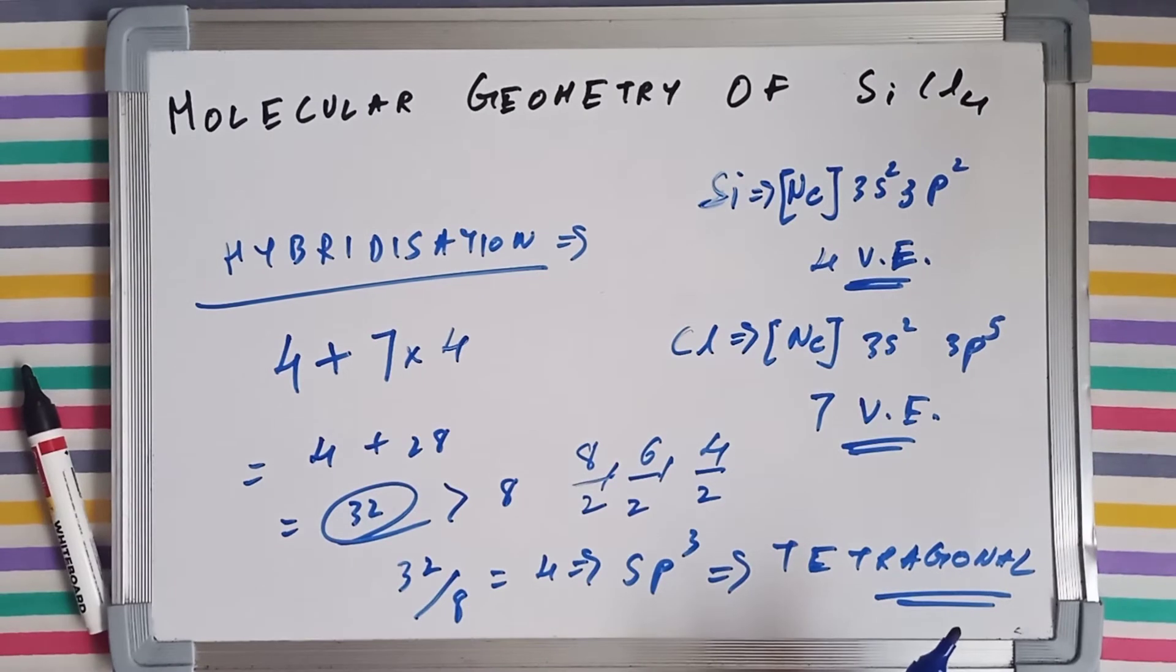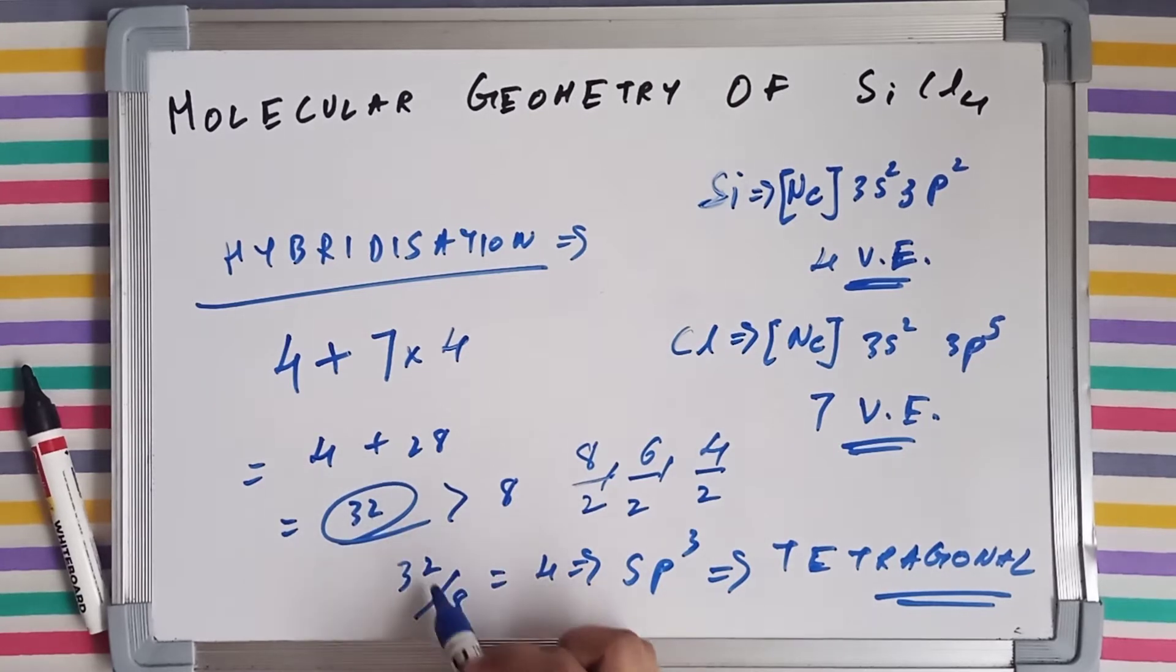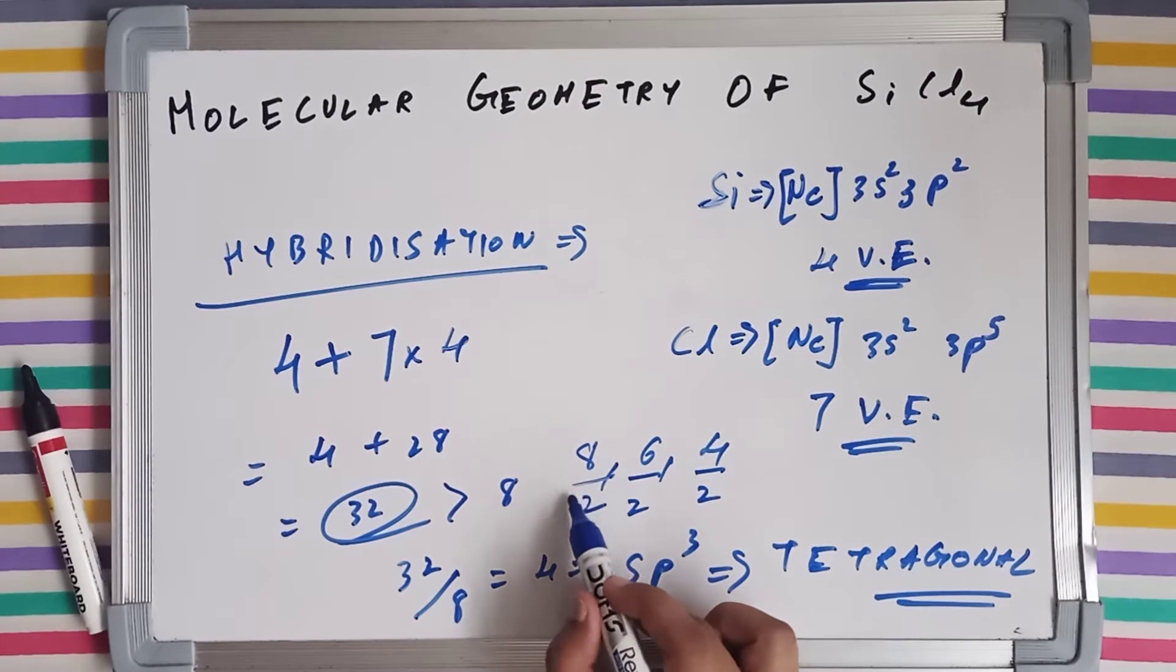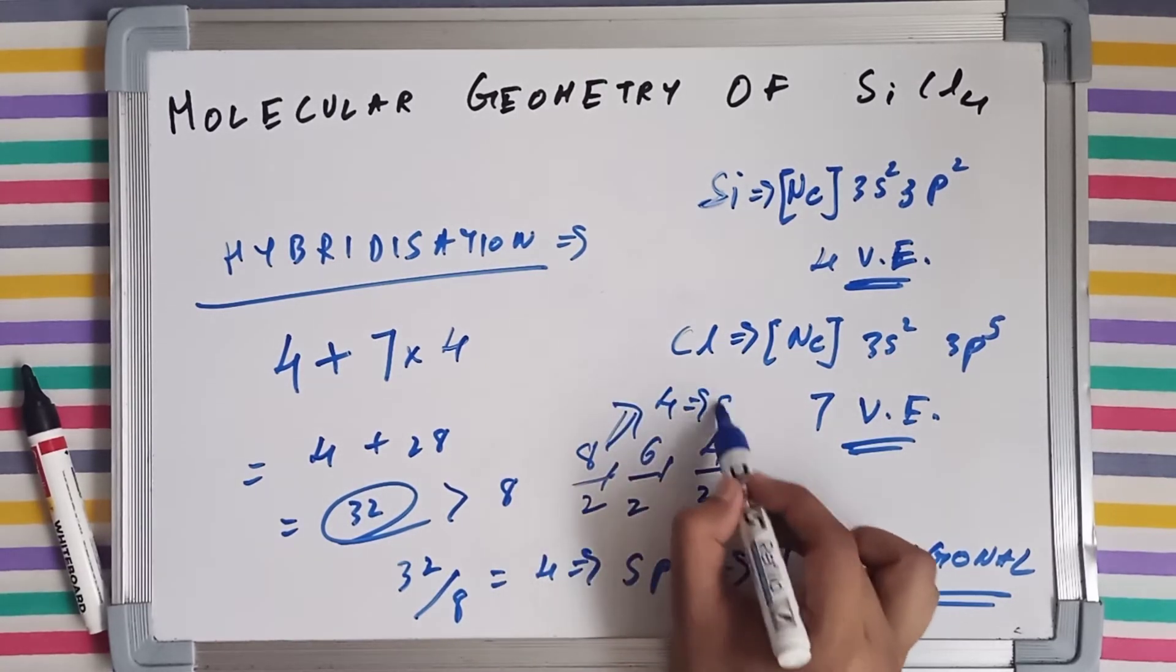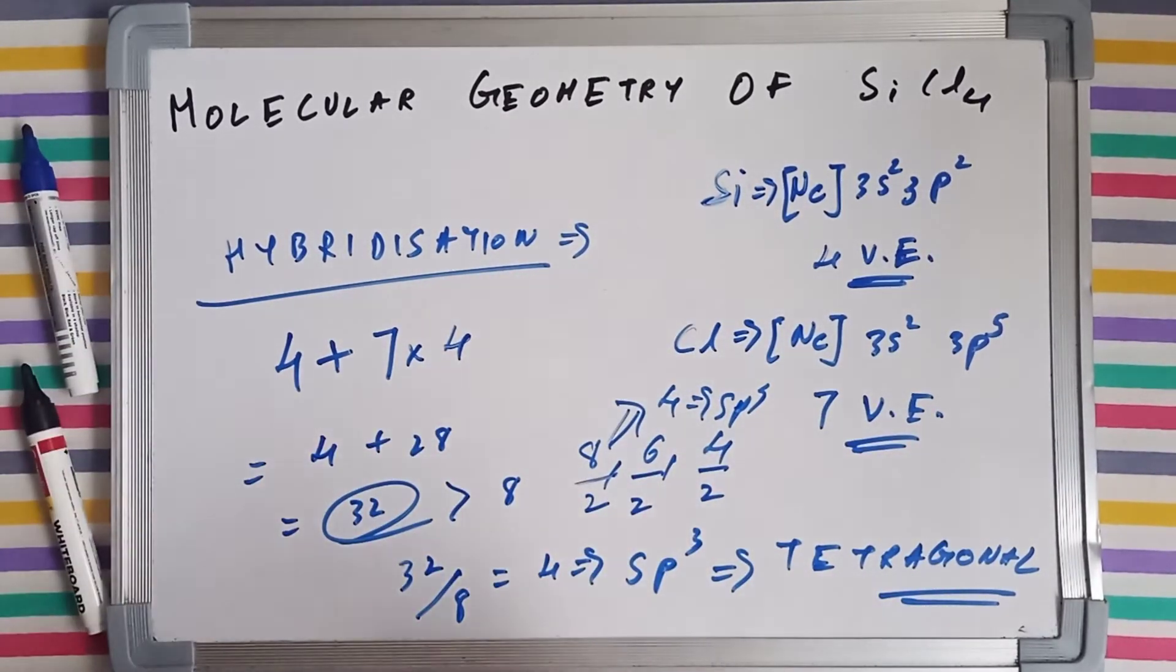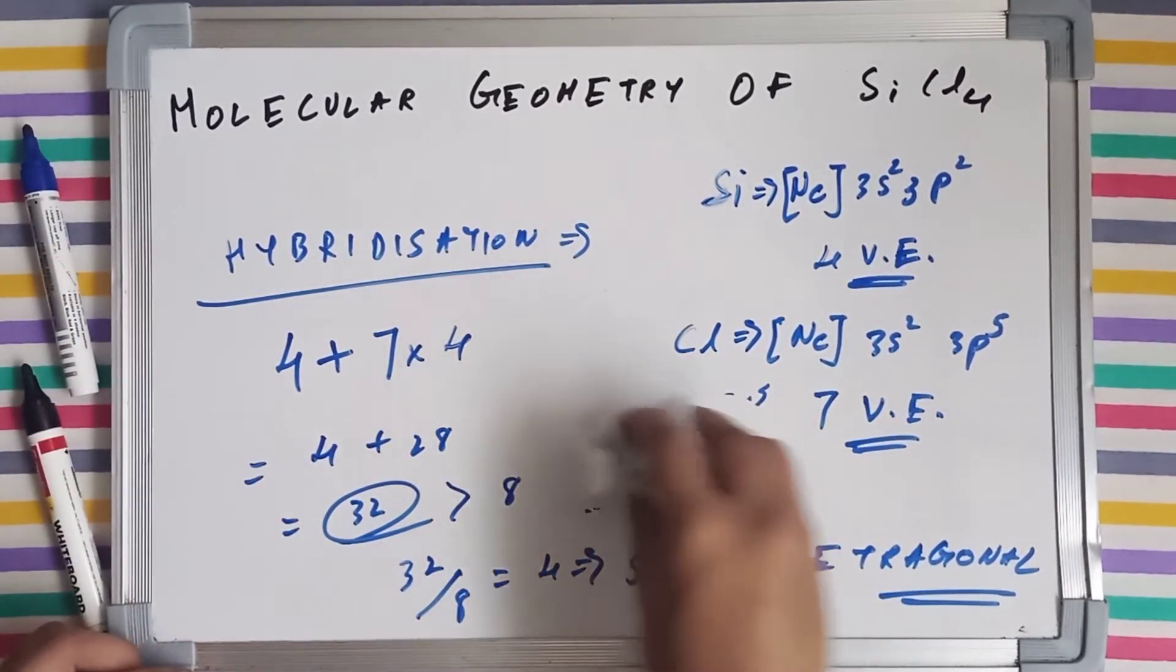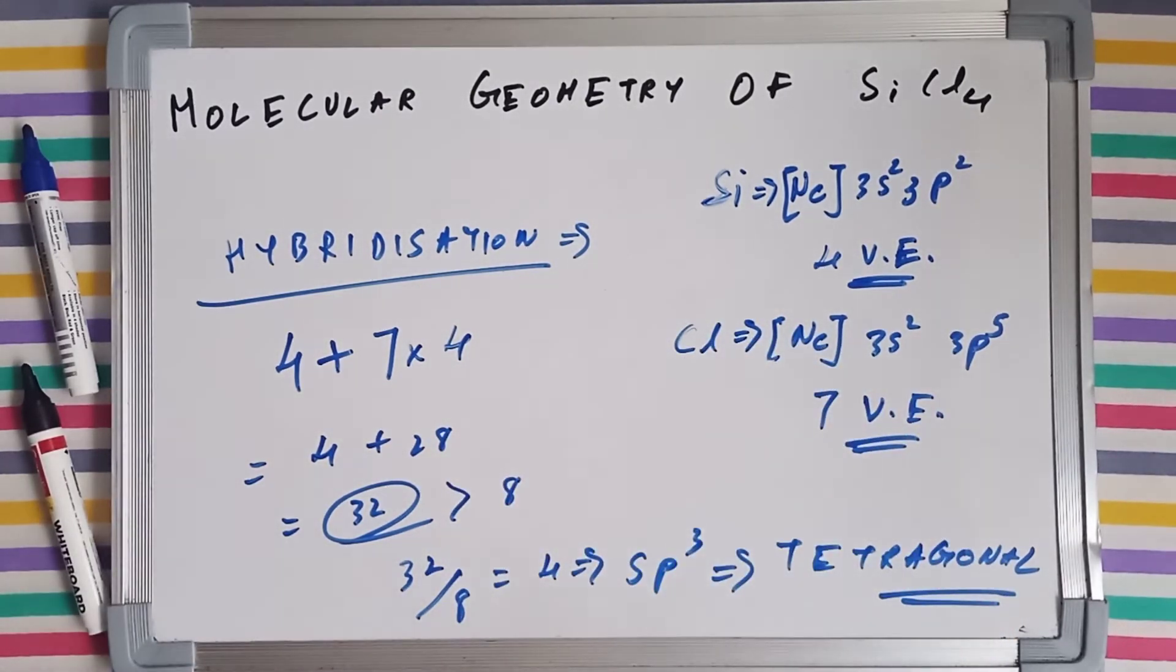I am just telling you so that you don't face any problems while calculating hybridization. But since it is 32, which is a larger number than 8, we divided it by 8. But if it would have been 8, then we would have divided it by 2, which would have given us 4 also, sp3. So it doesn't matter here, but just for the sake of knowing and telling.